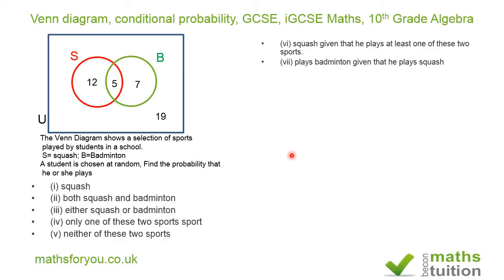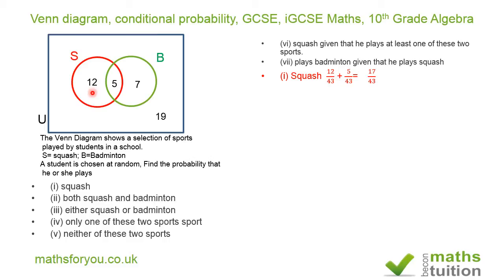For question one — squash — our total sample space is still 43 students. To play squash, it can be squash alone (12 students) or squash and badminton together (5 students), since those five also play squash. So: 12/43 + 5/43 = 17/43.